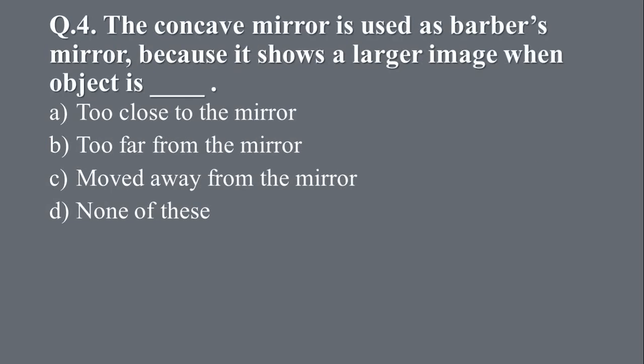Question 4: The concave mirror is used as a barber's mirror because it shows a large image when the object is blank. Option A, too close to the mirror. B, too far from the mirror. C, moved away from the mirror. And D, none of these. And the right answer is A, too close to the mirror.